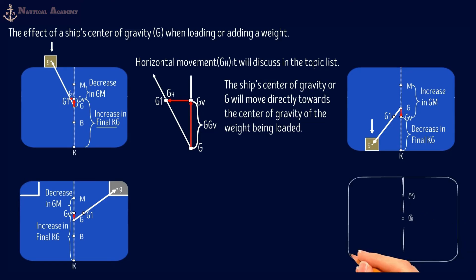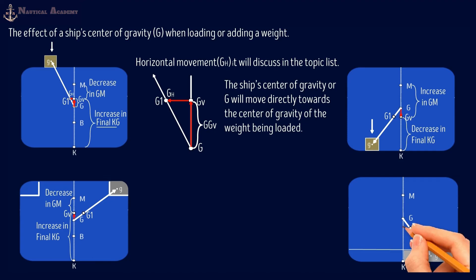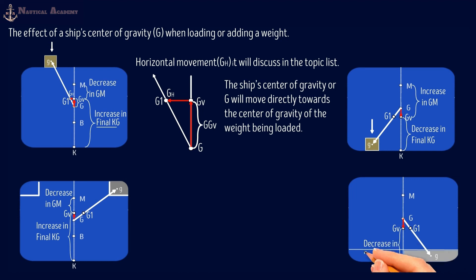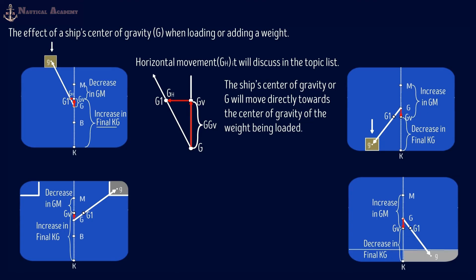The next scenario is filling in or pumping in water ballast in the double bottom tank. The center of gravity of the tank is here, marked as small g. The ship's center of gravity will move directly towards the center of gravity of the weight being loaded. The new G is marked as G1, and the vertical shift is marked as GV. The effect will be a decrease in KG and an increase in initial metacentric height GM. To find the KG or VCG of the liquid inside the tank, refer to the ship's sounding table.